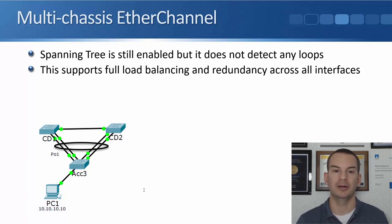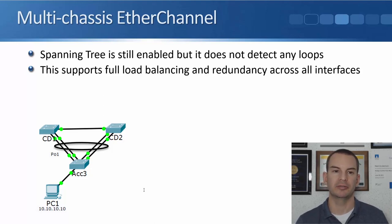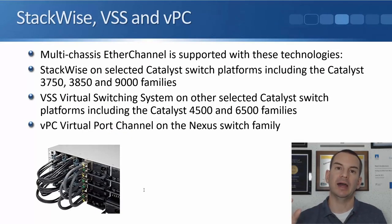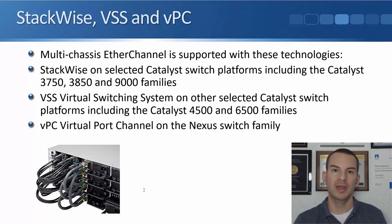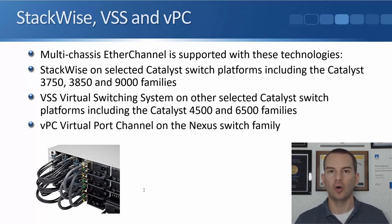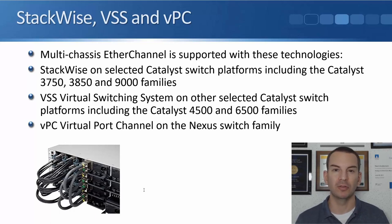We get full use of all our physical bandwidth, with full load balancing and redundancy across all the interfaces — if any interface goes down, it fails over to another available interface. The Cisco technologies that support this are StackWise, VSS, and VPC. A single switch will not support all three; different platforms support different options, and a switch will support only one. This is only available on higher-end switches.